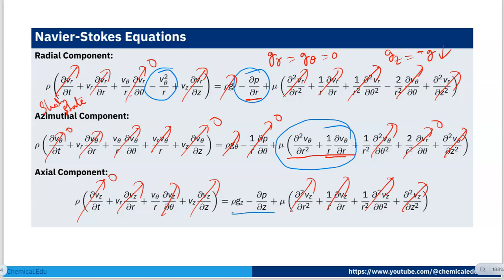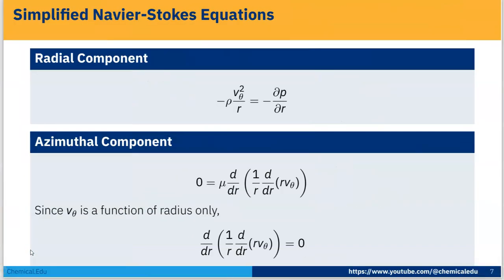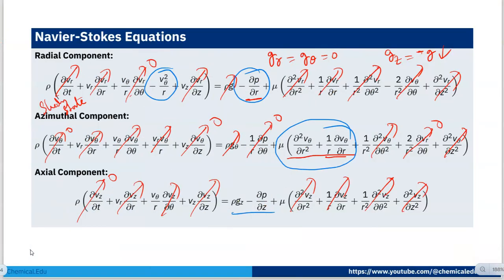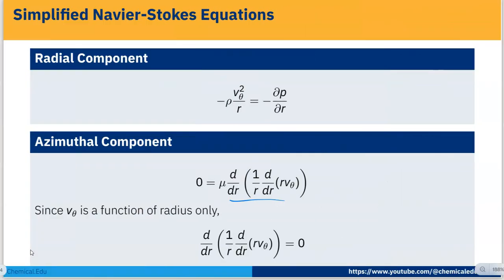From the radial component we get: −ρ·v_θ²/r = −∂p/∂r. From the azimuthal (theta) component: 0 = μ · ∂/∂r [1/r · ∂/∂r(r·v_θ)]. Since μ ≠ 0, this gives: ∂/∂r [1/r · ∂/∂r(r·v_θ)] = 0.